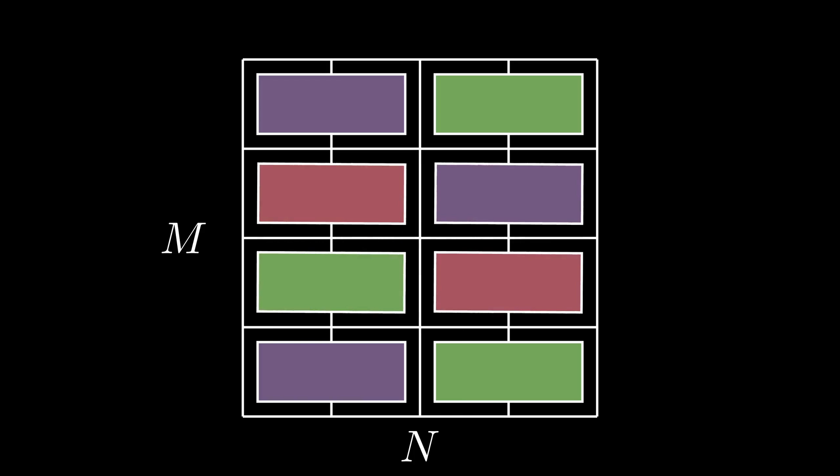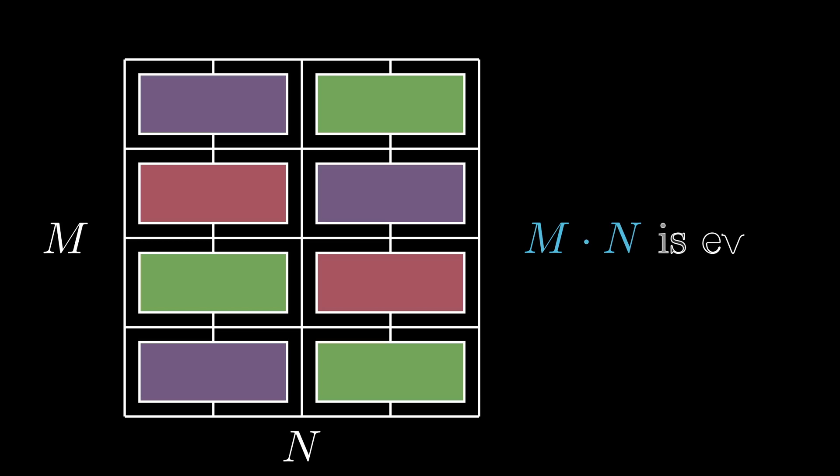First, let's consider for what m and n does a tiling of 2 by 1 dominoes even exist. It's easy to say that if any of the two dimensions is an even number, we can just cover the whole two-column with 2 by 1 dominoes and repeat for every row. To generalize, a tiling exists when m times n is even.